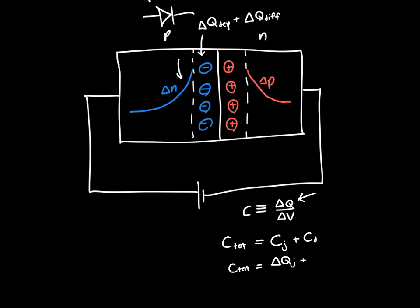And that's because C total is delta Q of the depletion region of the junction charge, plus delta Q, the diffusion charge, all divided by delta V. And so this is our Cj term, and this is our Cd term. So we can add the capacitances.